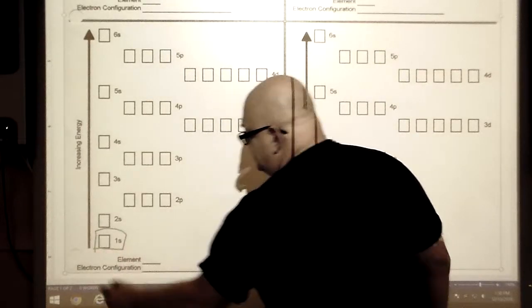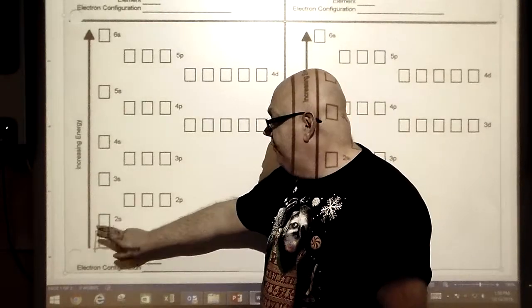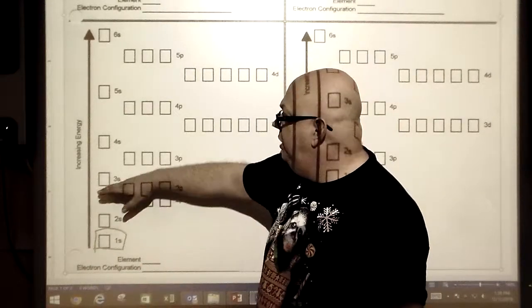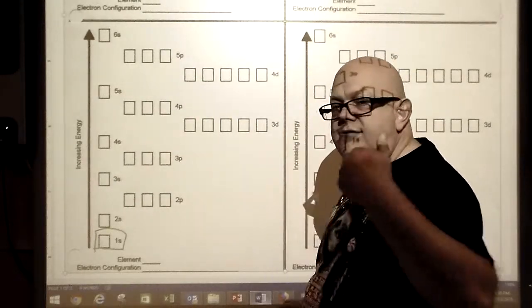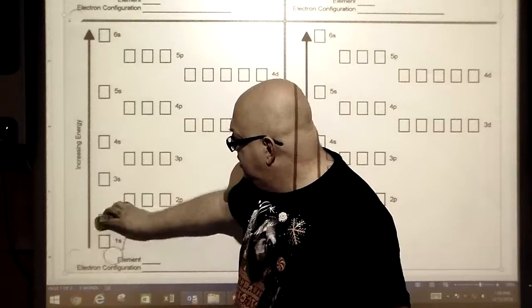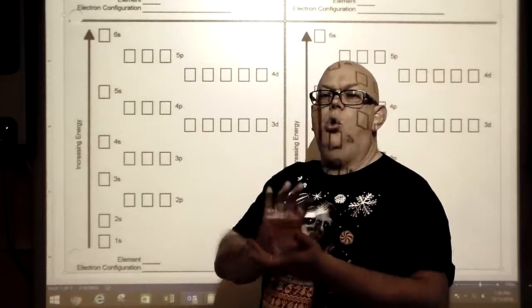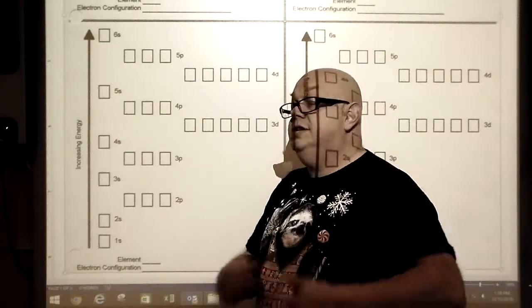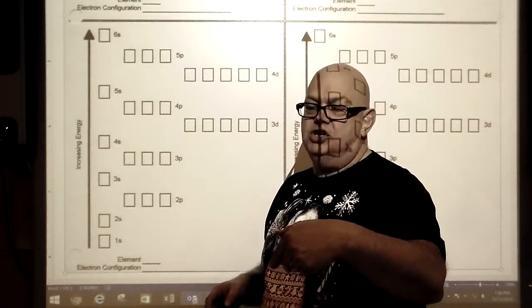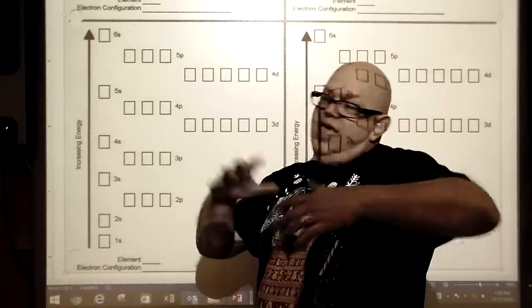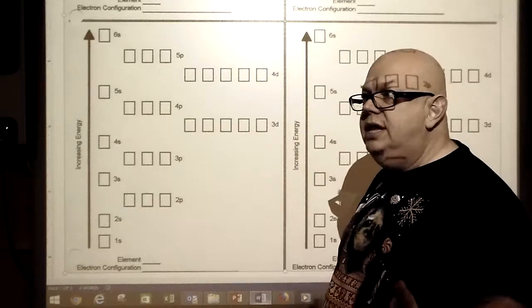Level 1 is the simplest level, closest to the nucleus. Then we have level 2, level 3, level 4, level 5, level 6, and so on. Inside of each level you have sublevels. Inside the sublevels you have orbitals. These are areas that electrons can hang out in. They only come into existence when the electrons are actually in there.